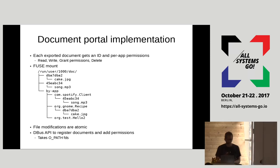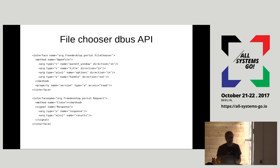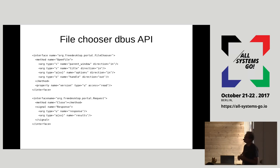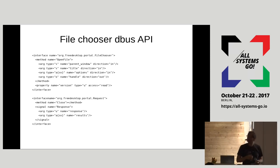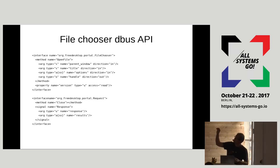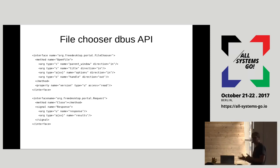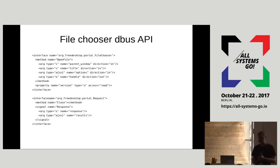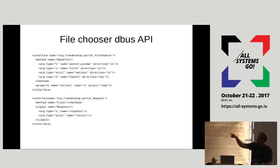The D-Bus API for the file chooser portal is quite straightforward. There's a single call, OpenFile, which takes properties like the X window ID for parenting the dialog, the dialog title, and various file chooser options. It returns immediately with a handle — a reference to the request object — so it doesn't block waiting for the user. This allows you to cancel the request if the app terminates or window closes, and you wait for a signal to get the user's actual response.